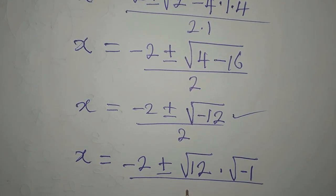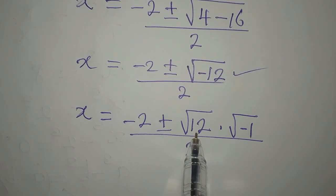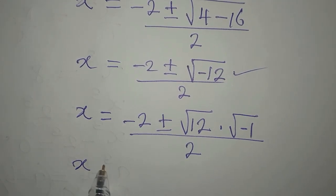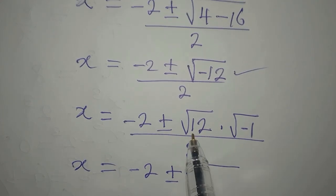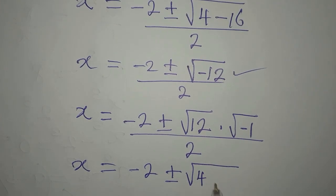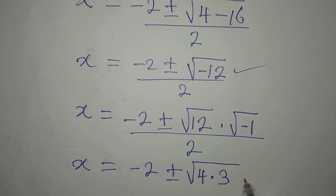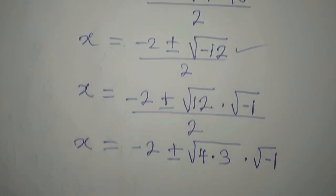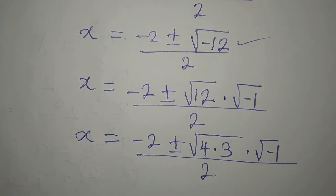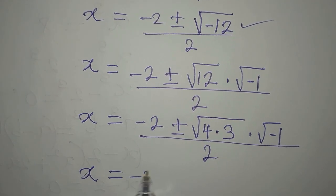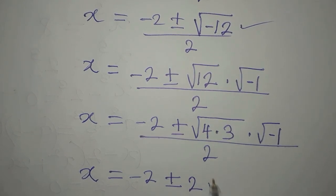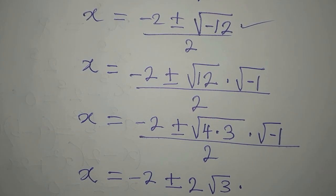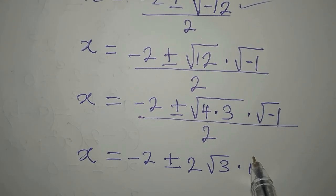Note that root 12 times root of negative 1 gives root of negative 12. We divide by 2. We can simplify root 12: 4 is a factor of 12 and is a perfect square, so root 12 equals root of 4 times 3. Then x equals negative 2 plus or minus the square root of 4 — which gives 2 — times root 3, multiplied by i, because the square root of negative 1 is imaginary, so we write i. Divide everything by 2.